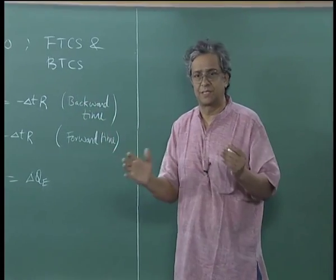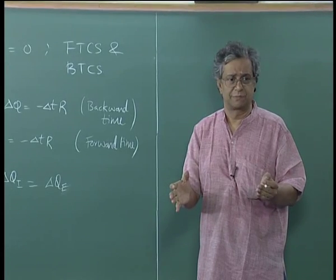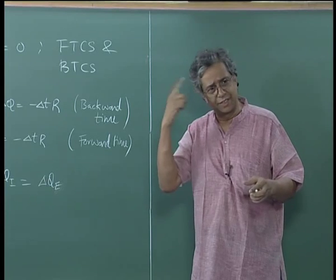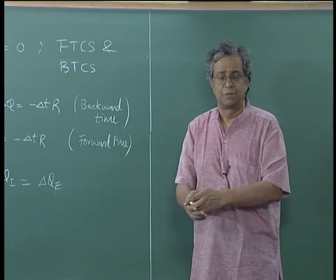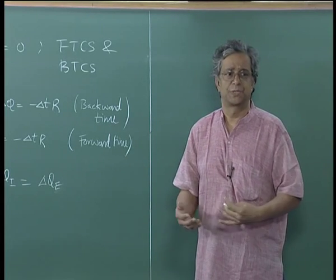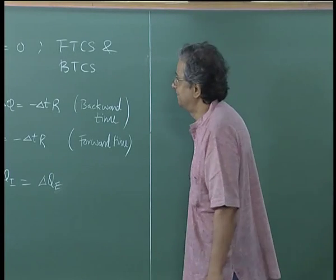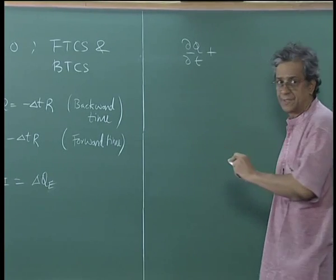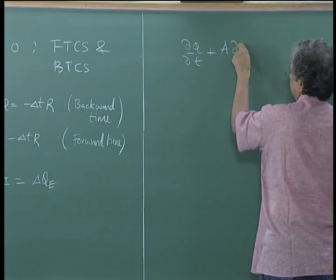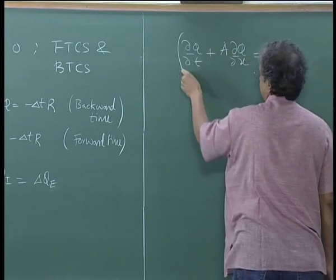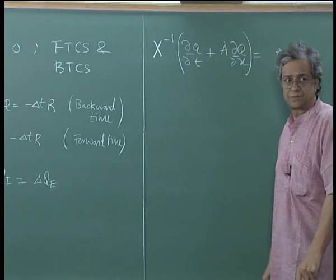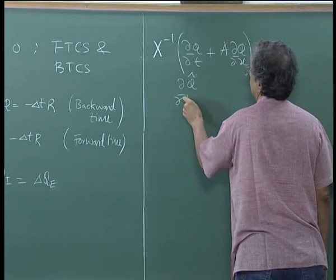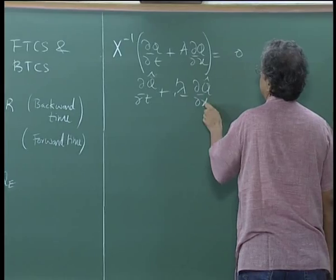Every little thing we do — you are trying to solve a problem, you have a local issue that you fix. You should also realize you may come up with clues to generate other techniques. For instance, take ∂q/∂t + A ∂q/∂x = 0 in non-conservative form in conservative variables, and if I pre-multiply by X inverse — X being the matrix of eigenvectors — this gives me ∂q̂/∂t + Λ ∂q̂/∂x = 0.